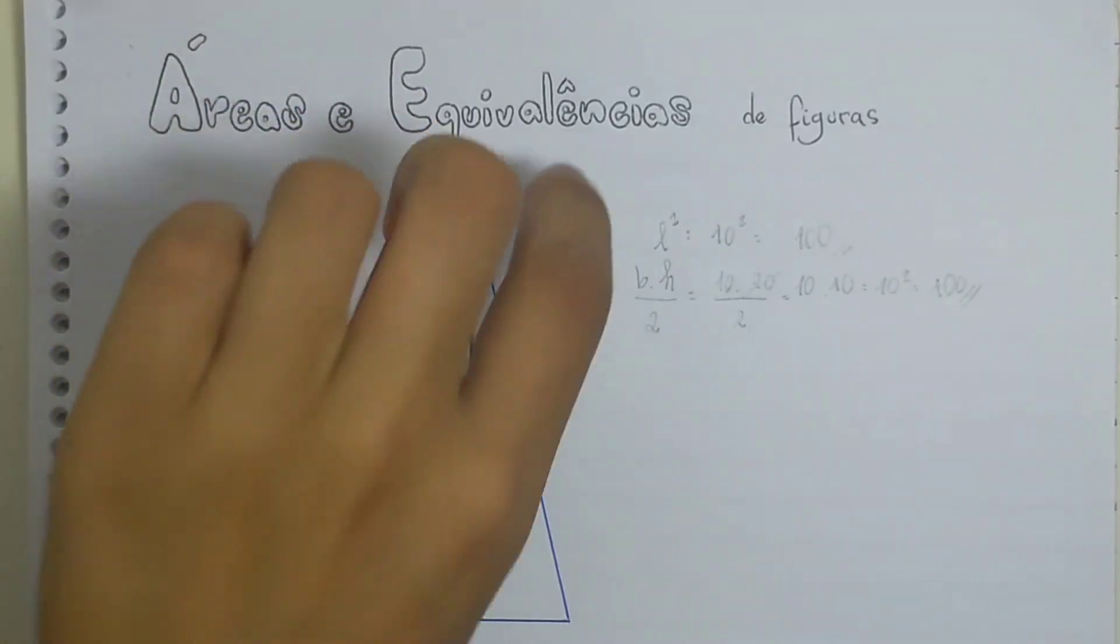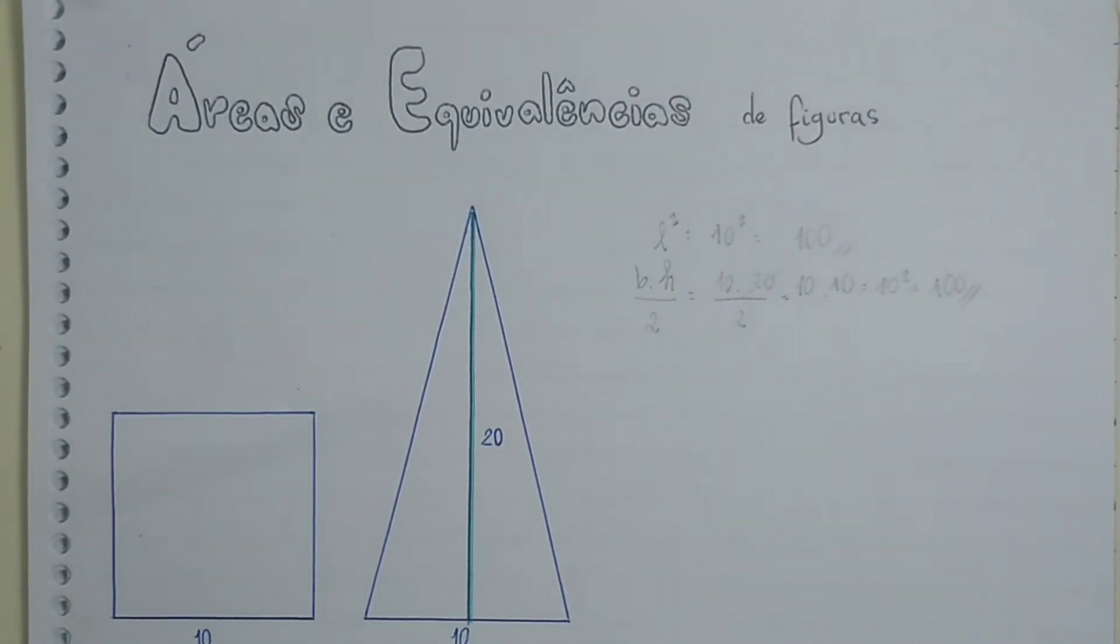So, according to the formula of these areas, the area of each of these figures, we can observe that these figures have an equivalence. Then, they are two figures of different forms but that have the same area.